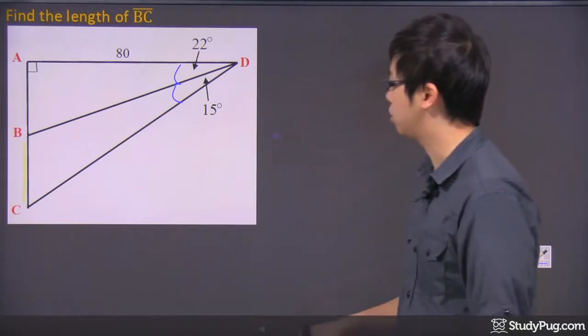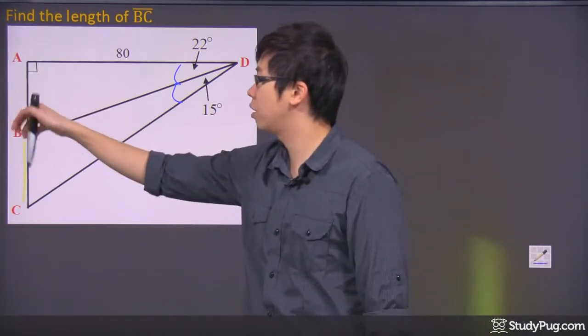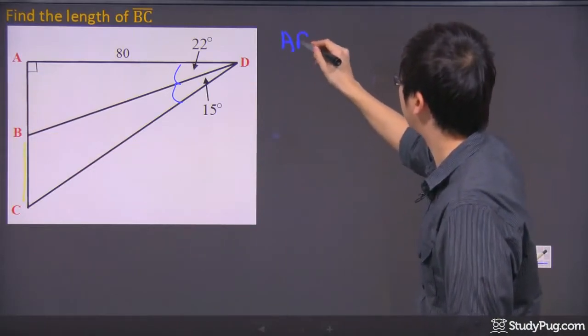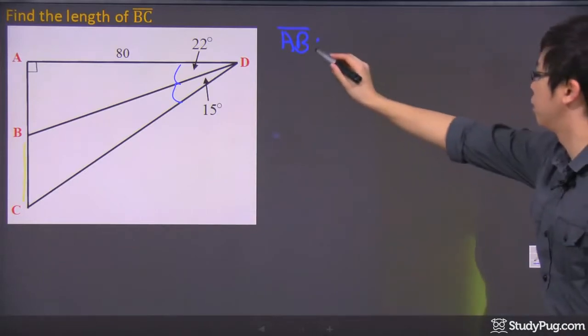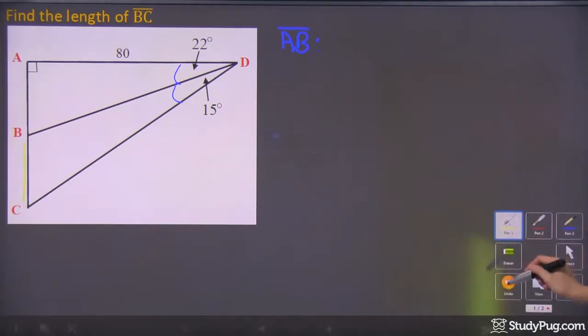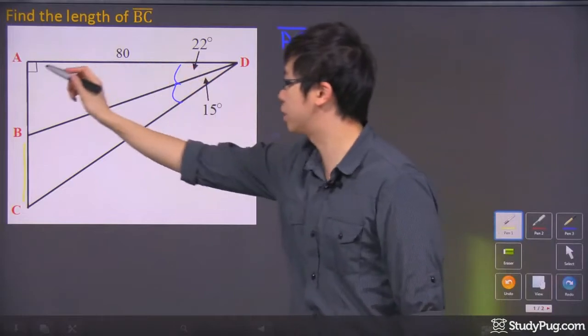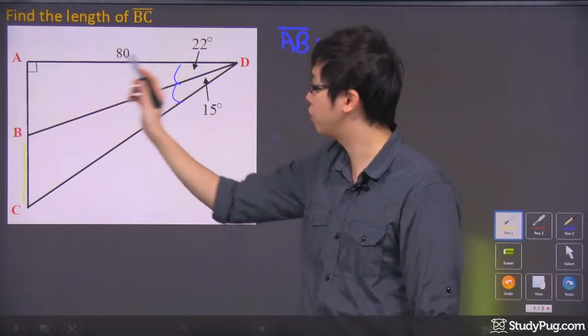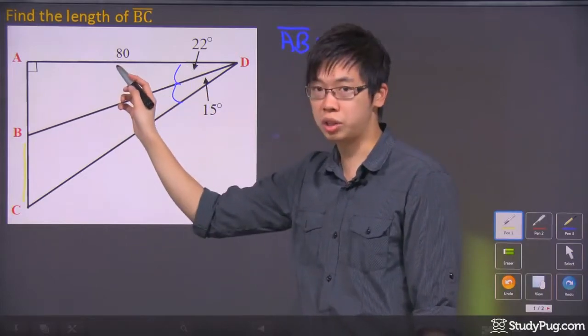Kind of weird. Let's actually do it step by step. So let's actually find the length A to B first. So here's my length A to B. To find the length A to B, you have to visualize your triangle - it's actually just this part right here. So you're trying to find the opposite side. From this angle 22, this is the opposite, this is the adjacent.